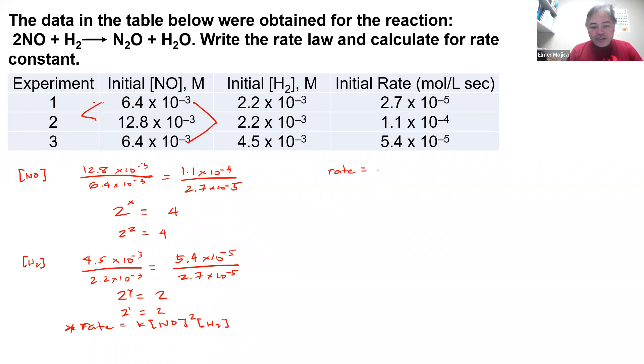So this is the k value we're looking for. If we divide both sides, we can just have here k equals rate over NO squared times H₂. So you have NO squared times H₂.